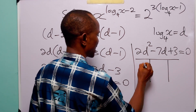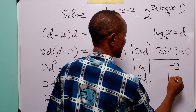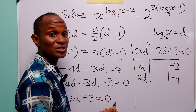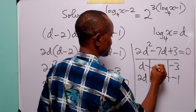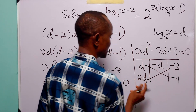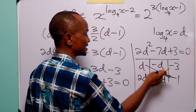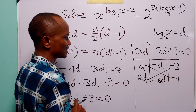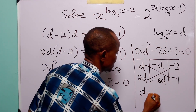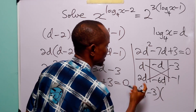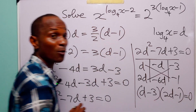So from here we have 2d squared minus 7d plus 3 is equal to 0. We can factorize this equation. The factors of 2d squared are d and 2d, and the factors of 3 are minus 3 and minus 1, because minus 3 times minus 1 is equal to plus 3. When we multiply these through we get minus 6d plus minus d which is minus 7d. So we can factorize this quadratic equation as d minus 3 multiplied by 2d minus 1 is equal to 0.